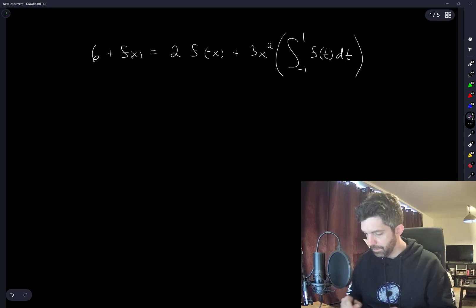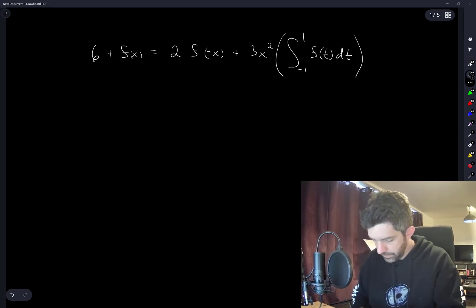Once I integrate both sides, the integral of f(x) is the thing we're looking for, and the integral of f(-x) is also the thing we're looking for. We'll have to do some work to integrate the quadratic term, and this constant will pop out. So let's integrate this whole thing from -1 to 1.